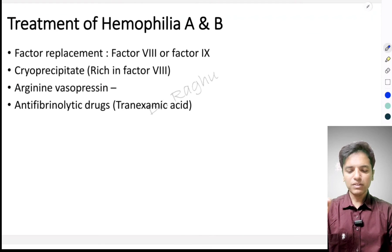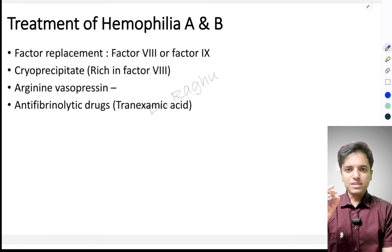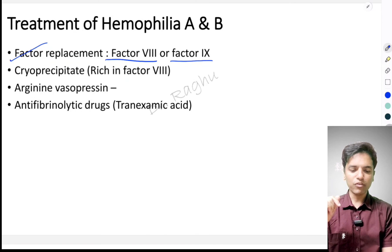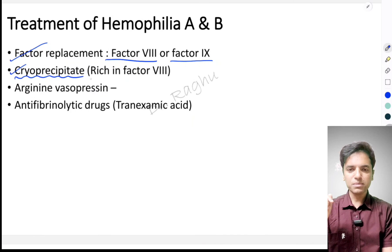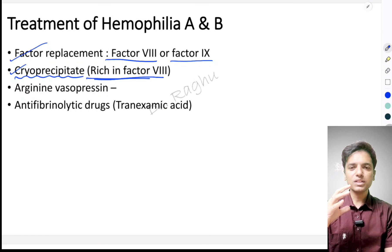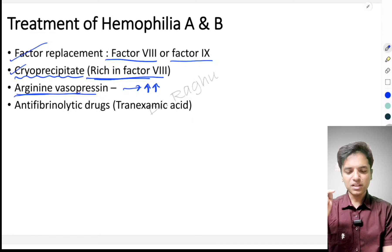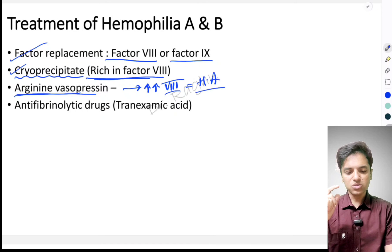The best way to treat hemophilia A or B is to replace the deficient factor — give factor 8 or factor 9 concentrate. Second, we can give cryoprecipitate, which is rich in factor 8, making it useful specifically for hemophilia A. We can also give arginine vasopressin, which increases the secretion of factor 8 and is therefore useful in hemophilia A but not much in hemophilia B.